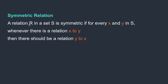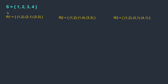Symmetric relation: a relation R in a set S is symmetric if for every x and y in S, whenever there is a relation x to y, there should be a relation y to x — meaning if (x,y) is in R, then (y,x) must also be in R. For example, a set S with elements 1, 2, 3, 4 and relation with (1,2), (2,1), and (3,3). For (1,2) we have (2,1), and (3,3) maps to itself, which counts as its own reverse. So for every element there is a reverse element — therefore this is symmetric.